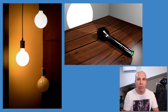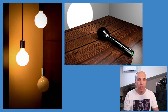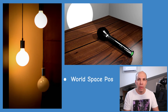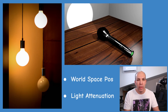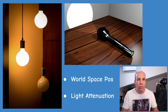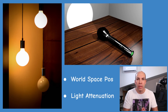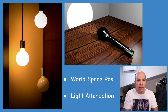The spotlight and the point light share two main characteristics. They both have a position in the 3D world and, since they are man-made, their intensity attenuates as the distance from the object to the light source grows. Both characteristics were addressed in the previous tutorial on point lights.